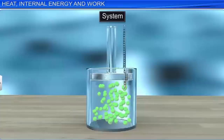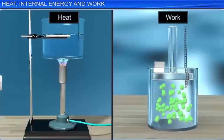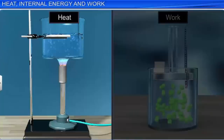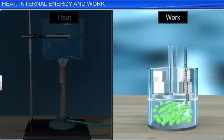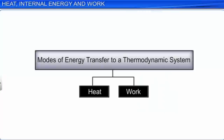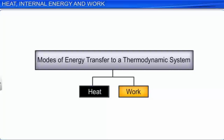We have two different ways of changing the internal energy of a system: one by allowing the system to exchange heat with its surroundings, and the other by allowing it to do some work. In thermodynamics, heat and work are the two modes of energy transfer to a system. Heat and work are not state variables—they depend on the path through which the system is taken.